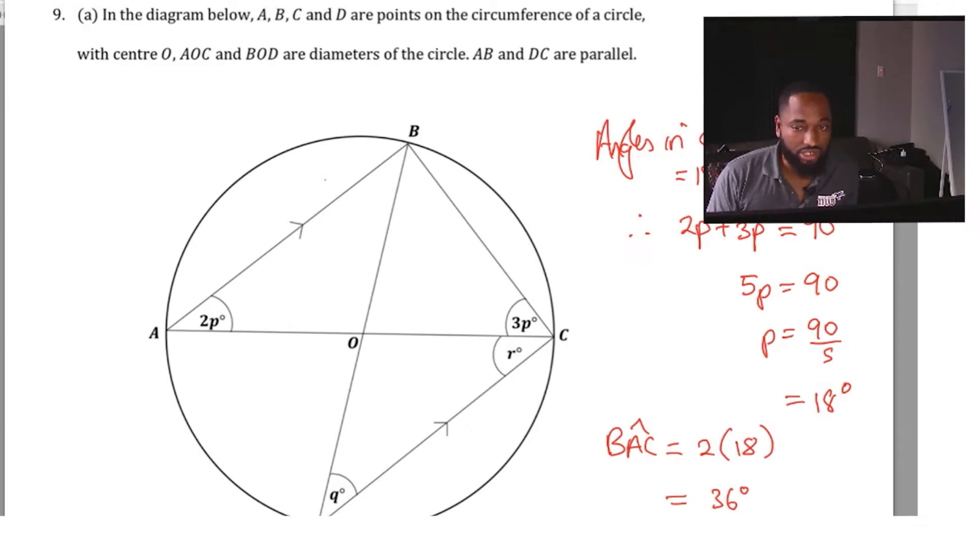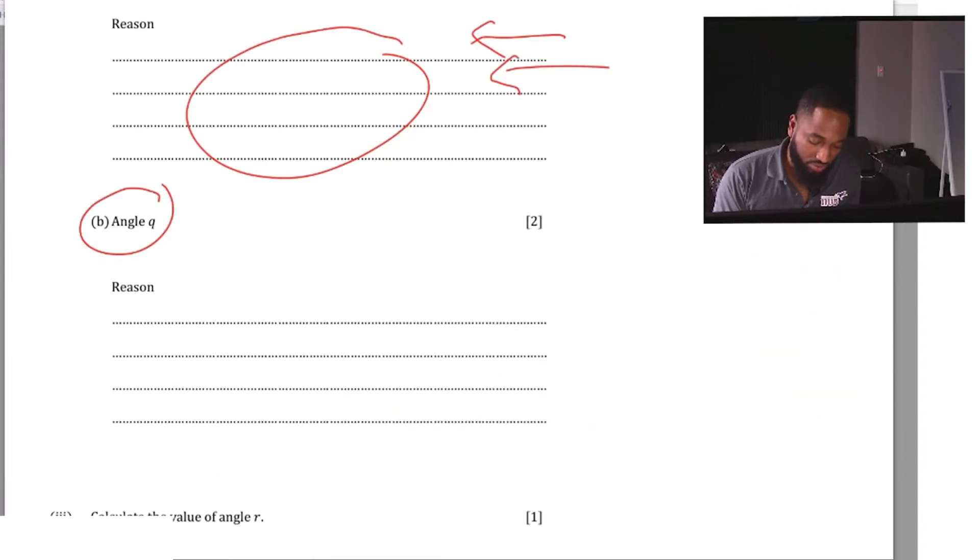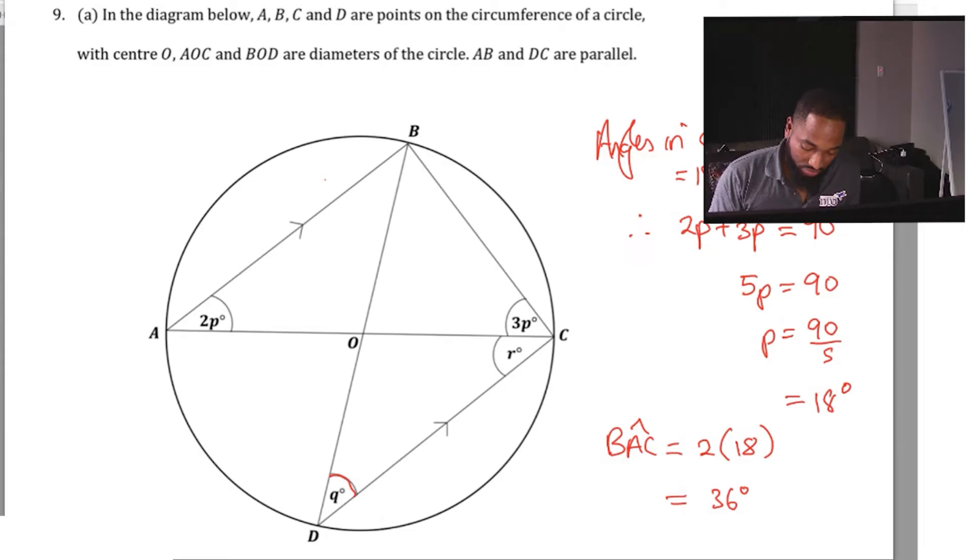We also need to find the value of angle q. Angle q is over here. Now I'm seeing a few ways where we can determine the value of angle q. The easiest way to find the value of q: I'm seeing here that there's this common chord. These two lines create an angle and these two lines create an angle, but they both extend from the same common chord.